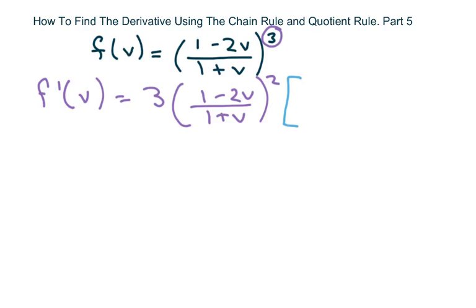And then we're going to take the derivative of the inner function. So we're using the quotient rule. It's going to be 1 plus V times the derivative of the numerator, which is negative 2, minus 1 minus 2V, your numerator, times the derivative of the denominator, all over 1 plus V and you square it.